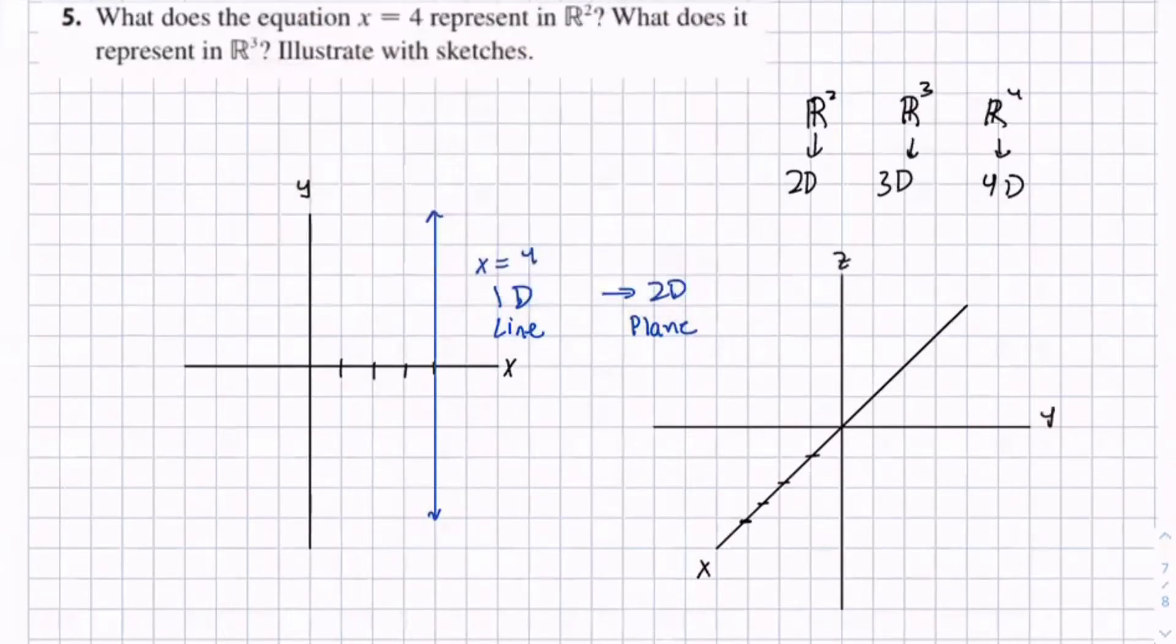And what x equals 4 creates is a line on the xy plane, similar to how it's a line in here.